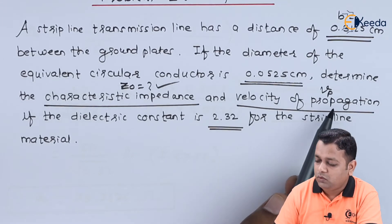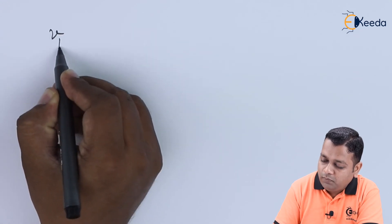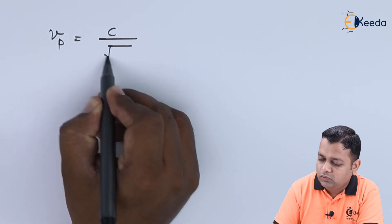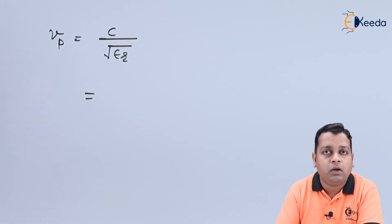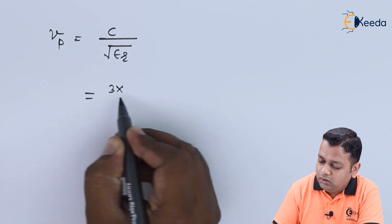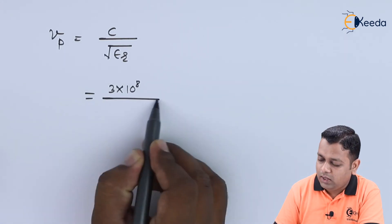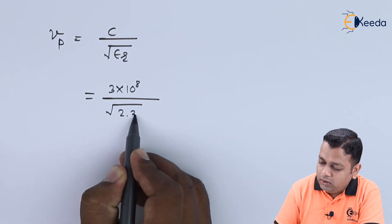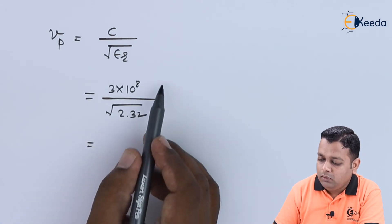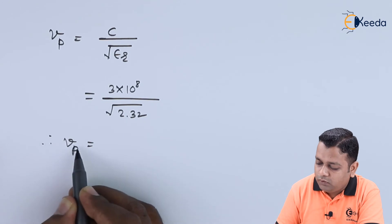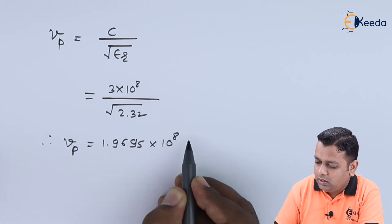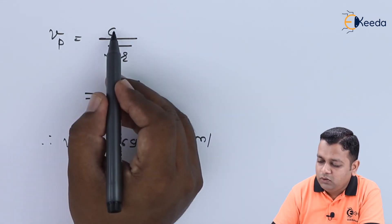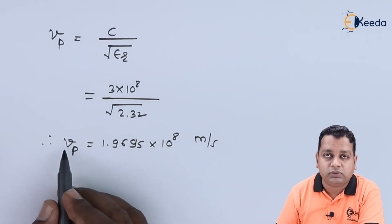We now require the velocity of propagation Vp. Using the formula: Vp = c / √εr, where c is the velocity of light in free space, equal to 3 × 10⁸ m/s, and the denominator is √2.32. This substitution gives the velocity of propagation Vp = 1.9695 × 10⁸ meters per second.